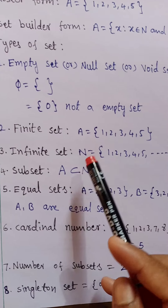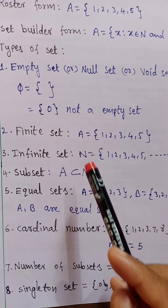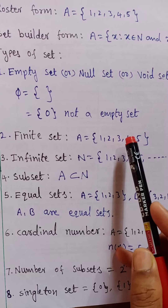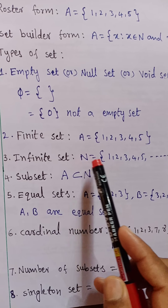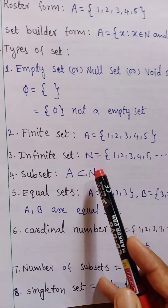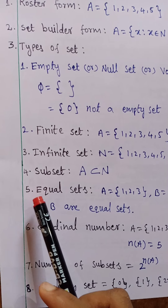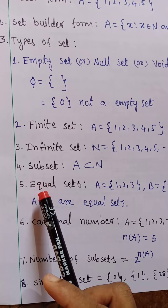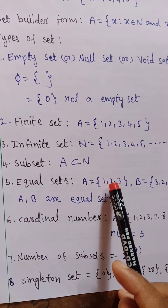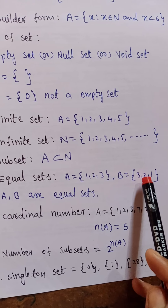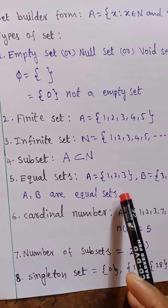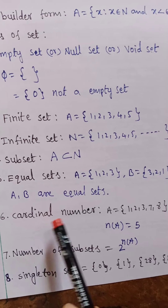Fourth one: subset. A is a subset of N — why? Because all elements that set A has are also in set N. So A is a subset of N. Fifth one: equal sets. Equal sets means two sets have the same elements. See: A equal to {1, 2, 3} and B equal to {3, 2, 1} — both are {1, 2, 3}. So A and B are equal sets.